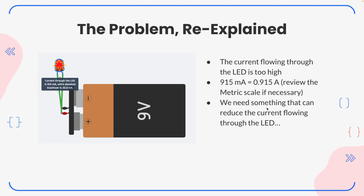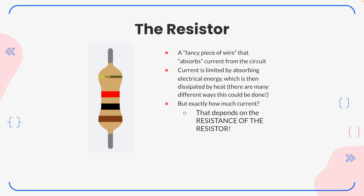We have too much current — measured in amps, or milliamps as TinkerCAD shows it. We need something we can add to our circuit to reduce the current flowing through the LED. That thing is called the resistor. The resistor is a fancy piece of wire that absorbs current from the circuit — it absorbs the electrical energy, which is then dissipated as heat.